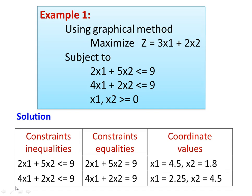Converting the inequalities to equalities: 2X1 plus 5X2 equal to 9, and 4X1 plus 2X2 equal to 9. For the first constraint, when X2 equals 0, we get 2X1 equal to 9, so X1 equals 4.5. When X1 equals 0, we get 5X2 equal to 9, so X2 equals 1.8. These are the coordinate values to plot the first constraint.